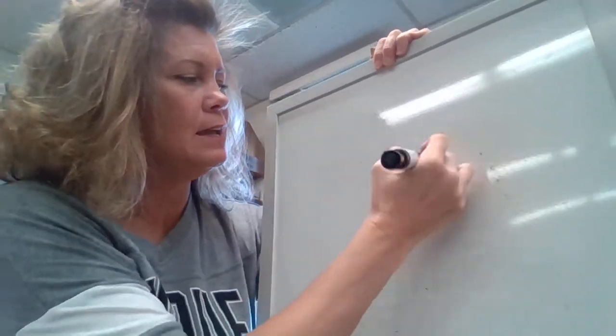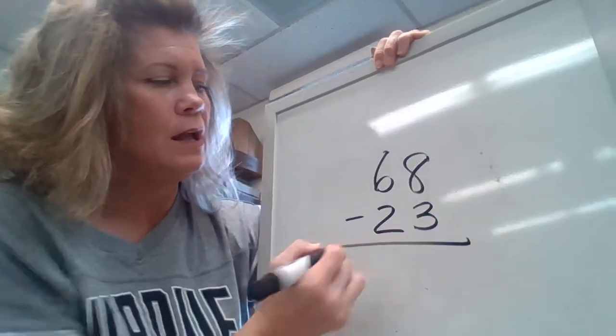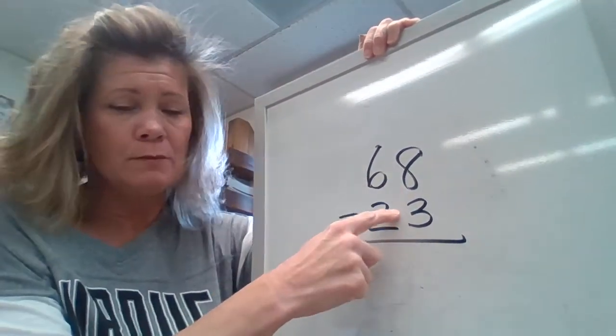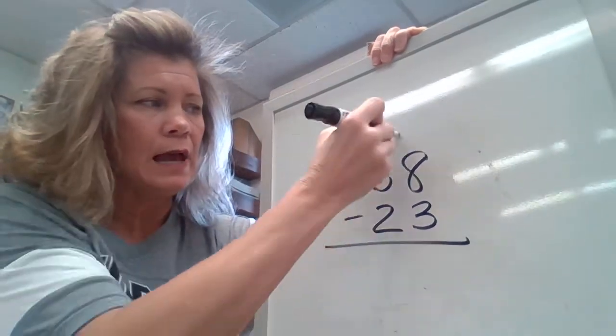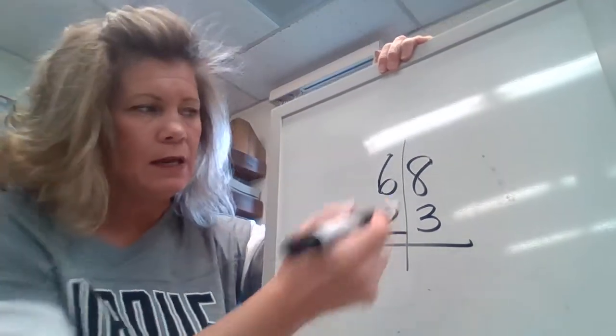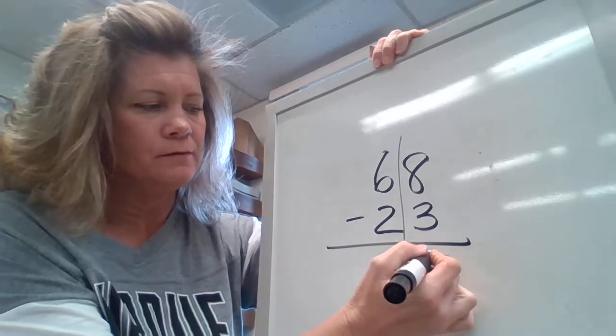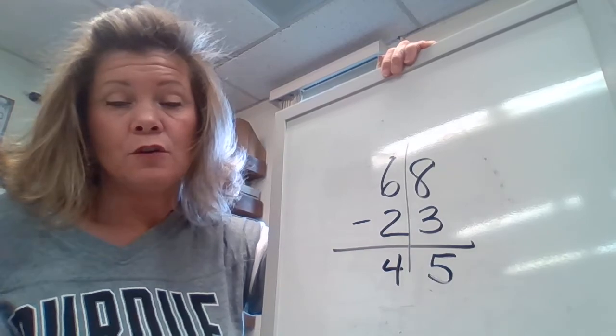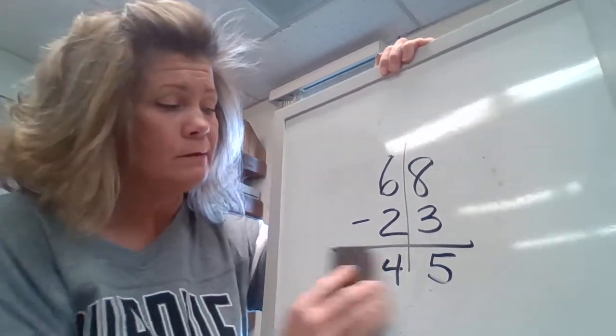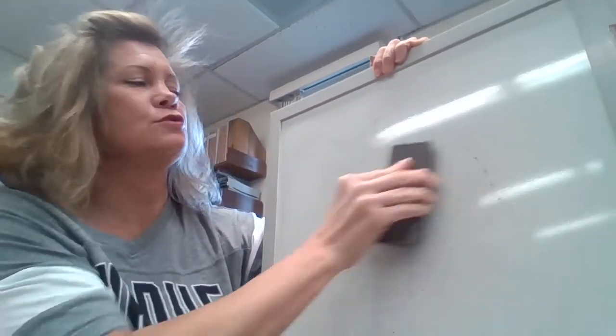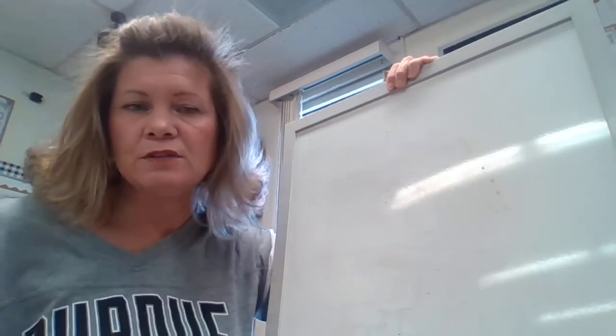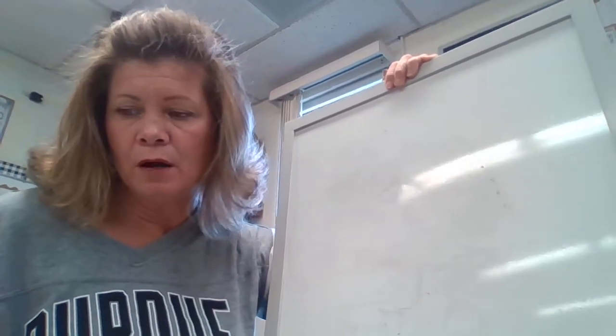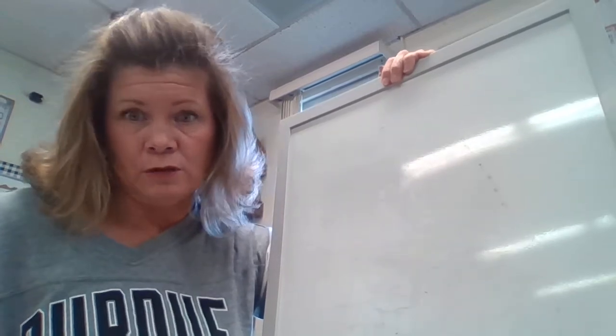You went ahead and just borrowed because you thought you were going to borrow. Don't do that. Make sure you stop and think about it. Look at it. If you have 68 minus 23, there is zero reason to borrow. No reason to borrow. 8 can minus 3. It's totally allowed. It's bigger. It's fine. 8 minus 3 is 5. No borrowing. 6 minus 2 is 4. They're going to try to trick you, folks. They're going to try to trick you. They're going to try to give you some where you have to borrow and then they're suddenly going to throw one at you that you don't have to borrow. So just make sure you look at it and you don't get confused.